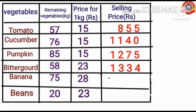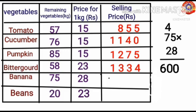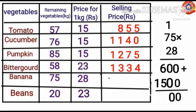Next, find the selling price of banana. To find out this, multiply 75 and 28. 75 into 28: 8 into 5 is 40 — write 0 here and 4 is the carryover. 8 into 7 is 56, plus 4 is 60. 2 into 5 is 10 — write 0 here and 1 is the carryover. 2 into 7 is 14, plus 1 is 15. Adding together: 0 plus 0 is 0; 0 plus 0 is 0; 6 plus 5 is 11 — write 1 here and 1 is the carryover; 1 plus 1 is 2. Selling price of banana equals Rs. 2100.